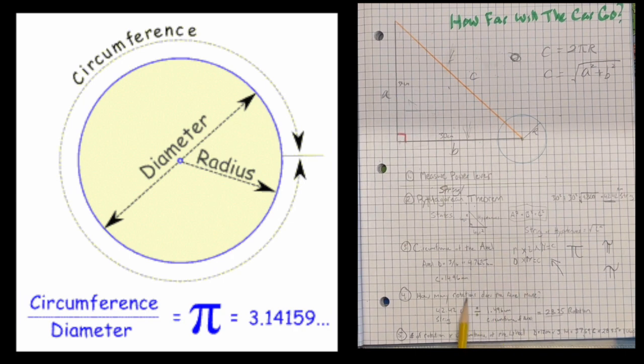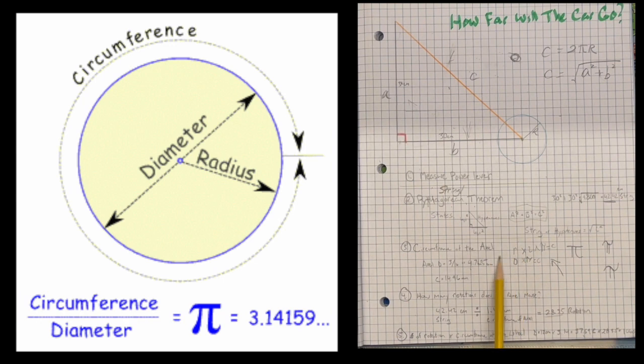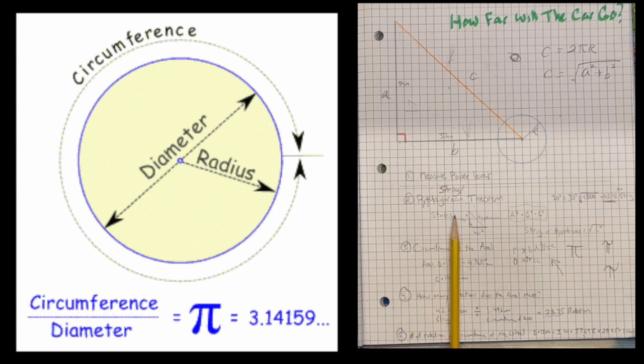How we got the circumference: the radius times two times pi equals circumference, and the diameter times pi equals the circumference. Pi is the ratio between diameter and circumference.